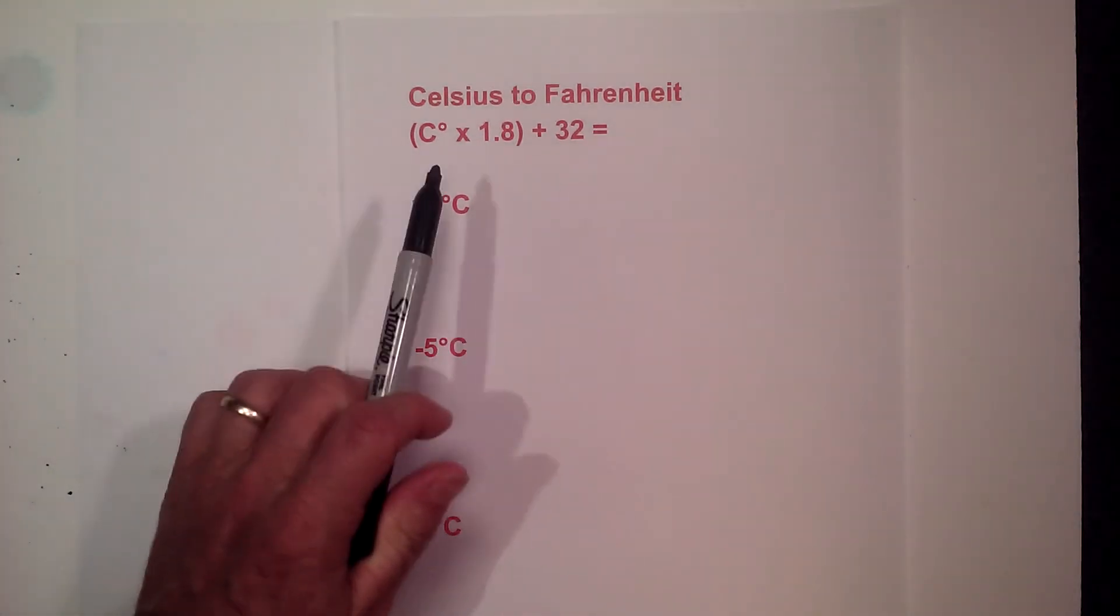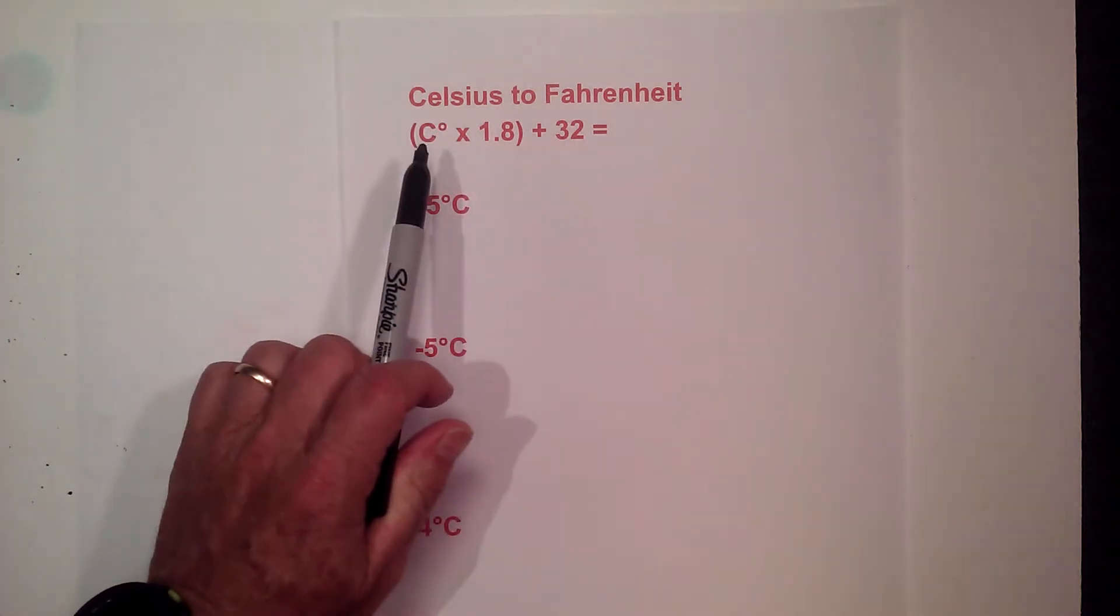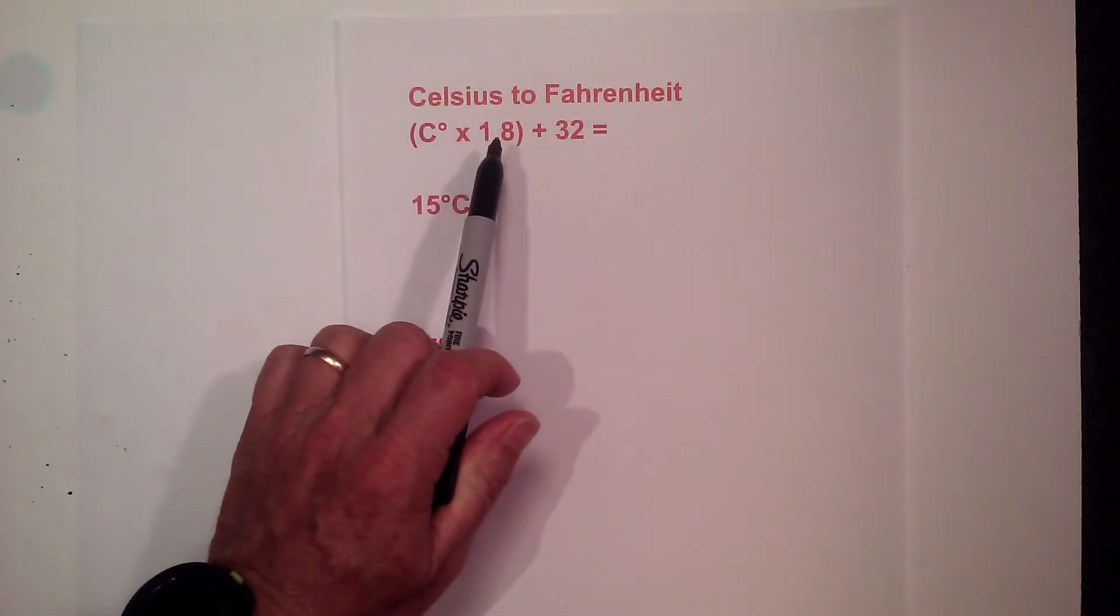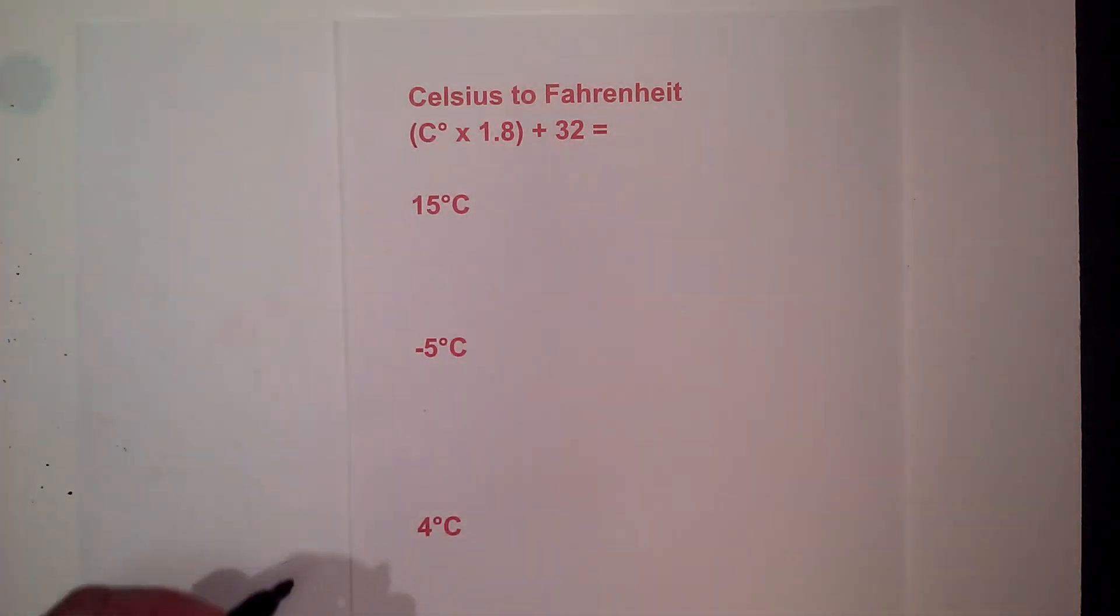The formula I like to use for Celsius to Fahrenheit is Celsius degrees times 1.8 and then add 32. So let's get started.